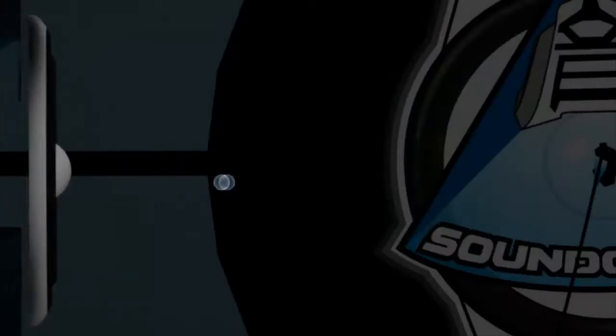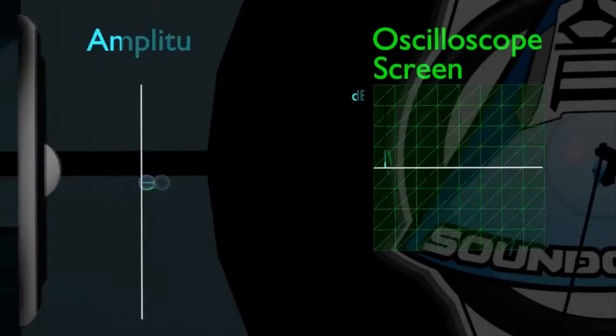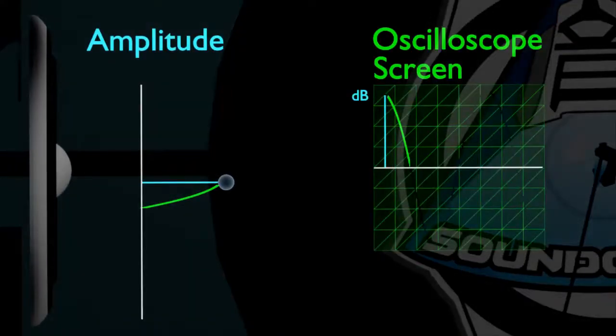Second, when we apply energy to the source, the molecules start to oscillate. The maximum displacement measured from the equilibrium position is known as amplitude, and it is measured in dBs or decibels.